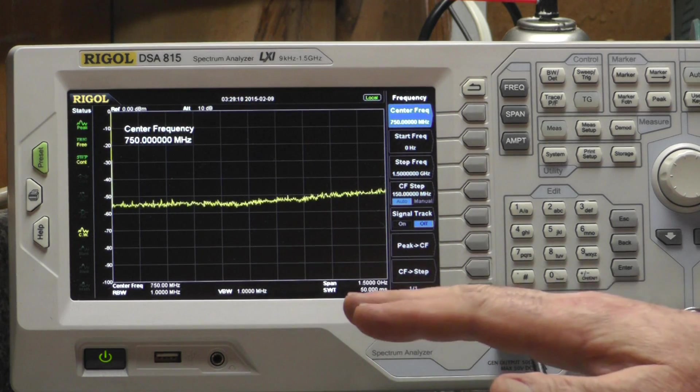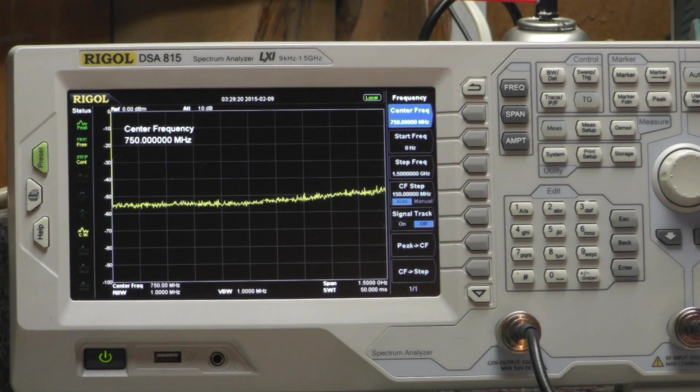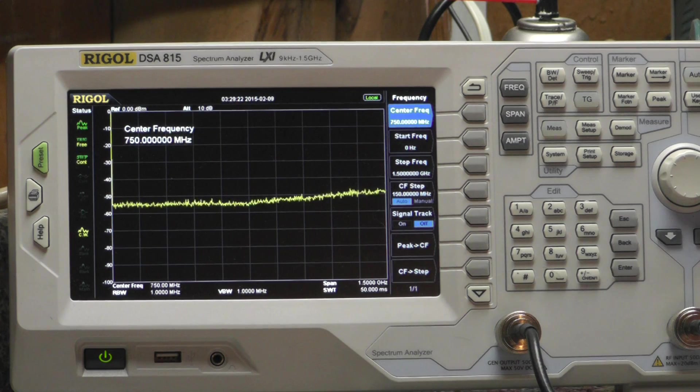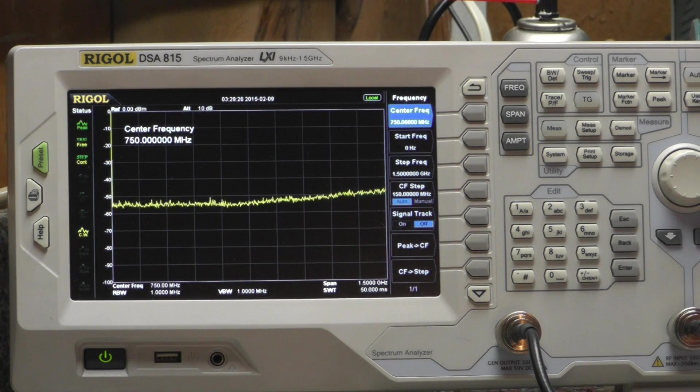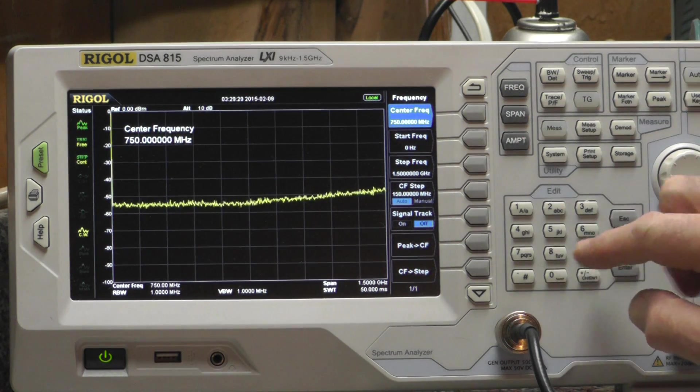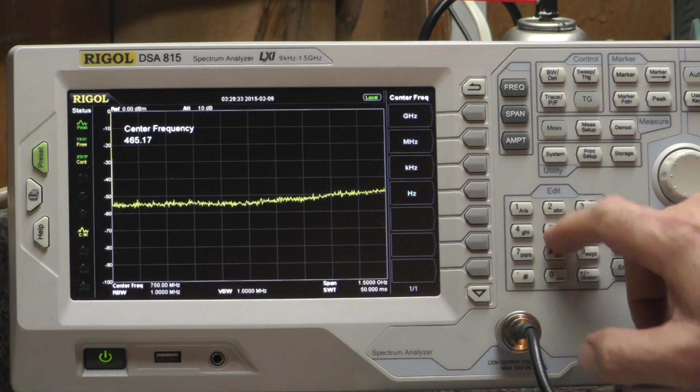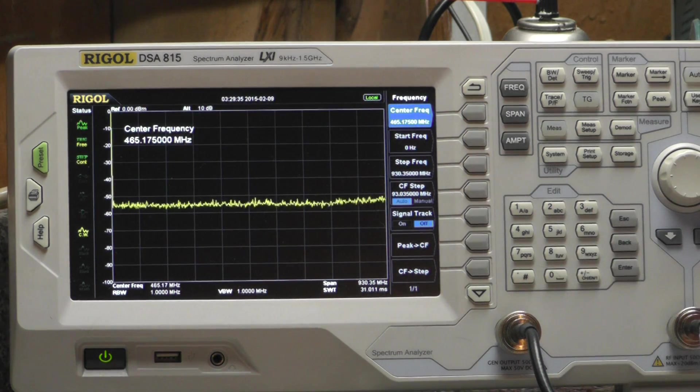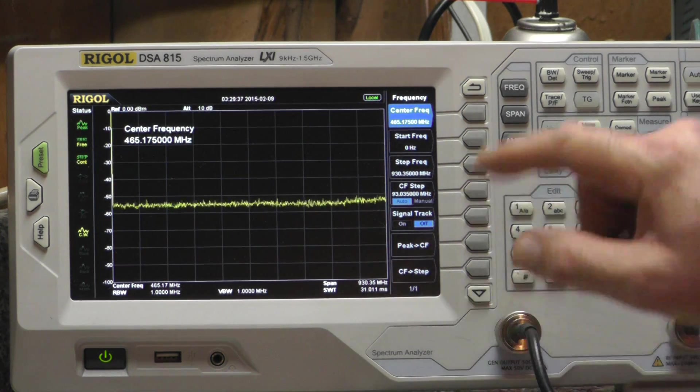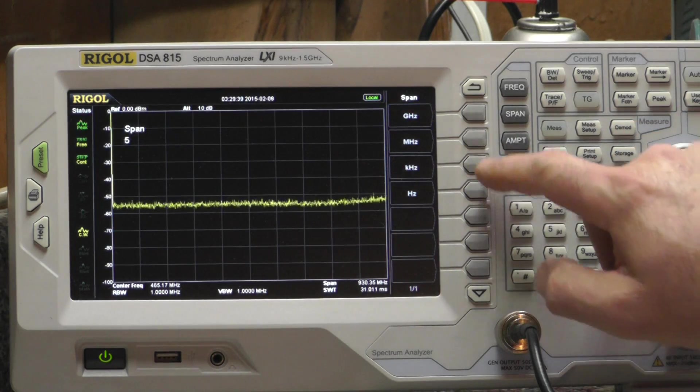To get started here I'm going to dial in my transmit frequency. I'm going to notch my transmit frequency out of my receive side. In this case my transmit frequency is 465.175 megahertz and I'm going to set up a span of about 5 megahertz.